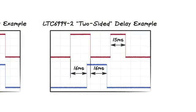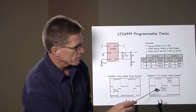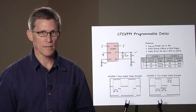The second scope photo shows the LTC6994-2 in the same configuration and demonstrates two features. First, both edges of the first pulse are delayed 16 milliseconds as expected.